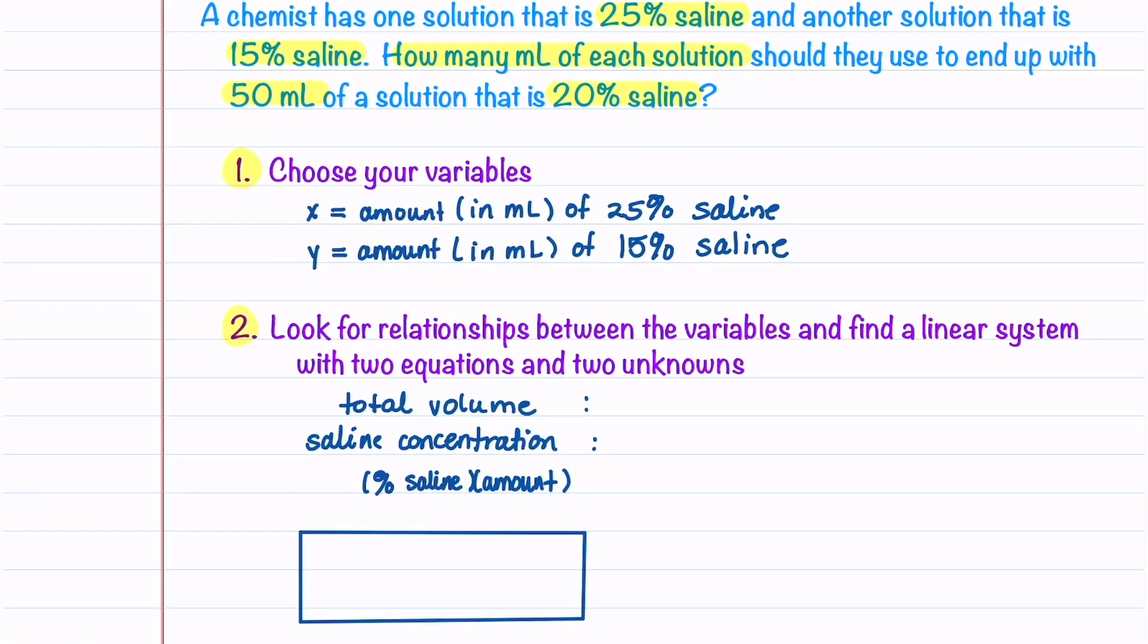Our second step is to look for relationships between these two variables x and y and find a linear system of two equations and two unknowns. The first equation involves total volume: x plus y equals 50 milliliters.